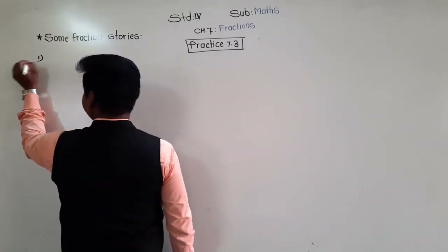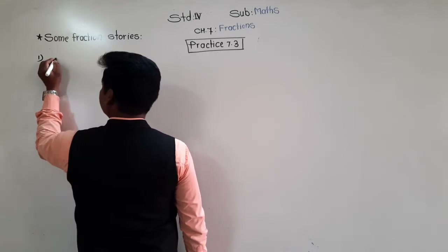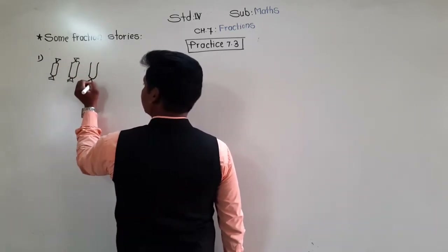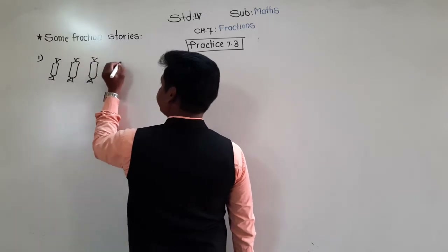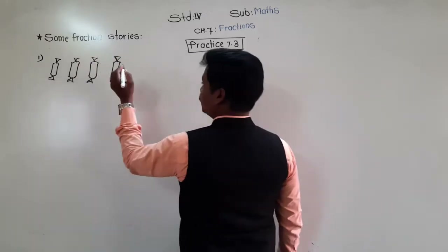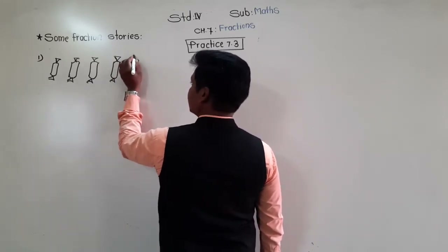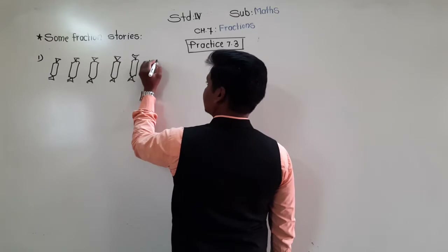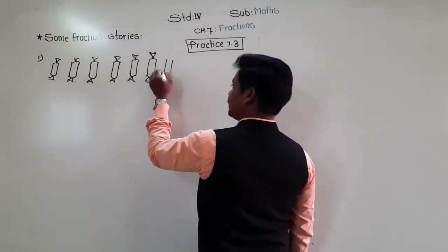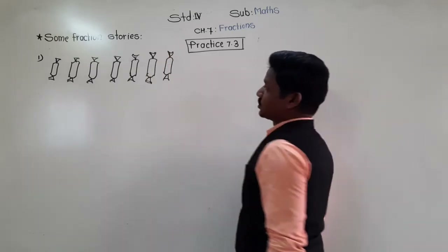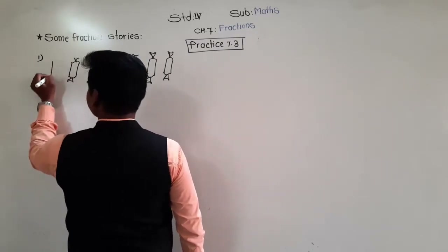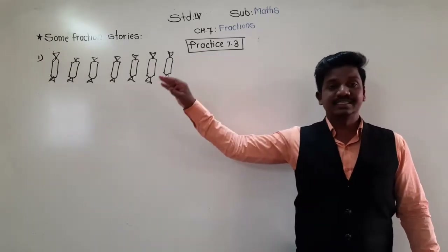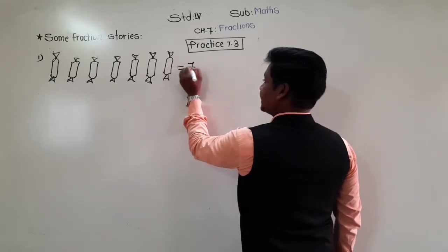I'm drawing the seven chocolates: one, two, three, four, five, six, seven. The first one is quite small so let me draw it again. So these are the seven chocolates, and these seven chocolates are to be divided equally among the two girls — Mona and Sona.